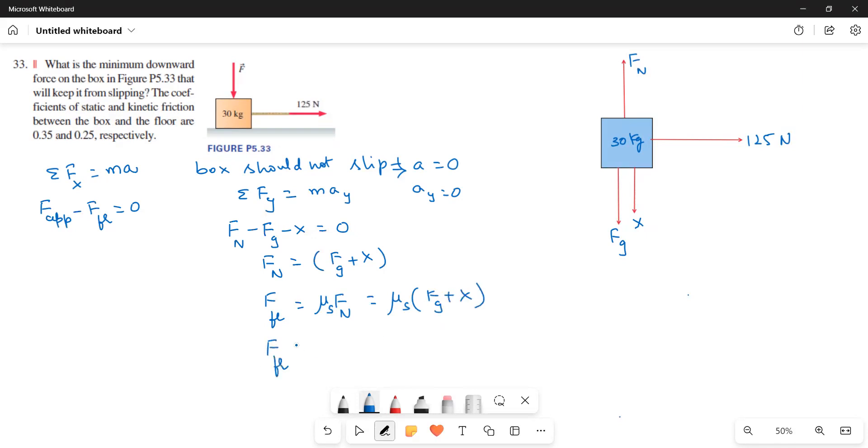So F friction is equal to, what is this one? 0.35, static coefficient of static friction is 0.35, and then FG is equal to, here I will write FG is equal to MG.